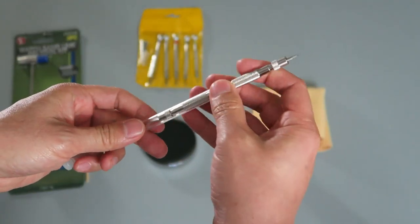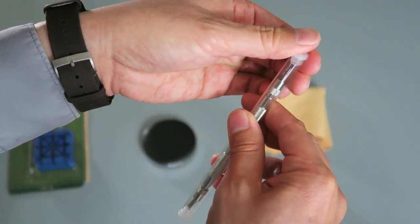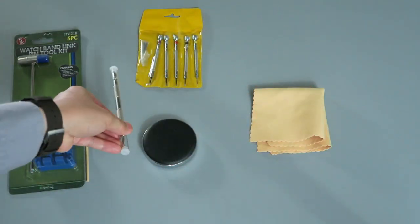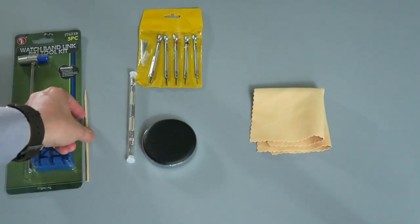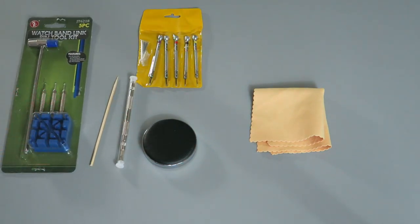Now something I forgot to mention is most spring bar tools come with a little case as you see here. Be sure to store them in the case because if you ever drop the spring bar tool on like a hardwood floor or something it could actually damage the hardwood floor and it could also damage the tool itself. So if it comes with a case be sure to store it in the case and that will help you out in the long run.